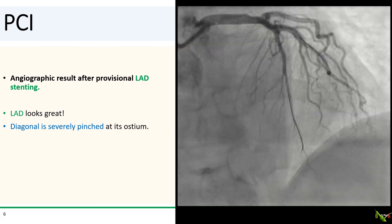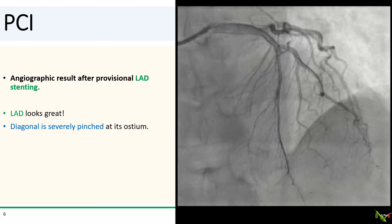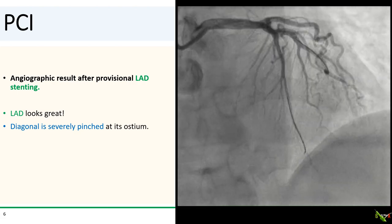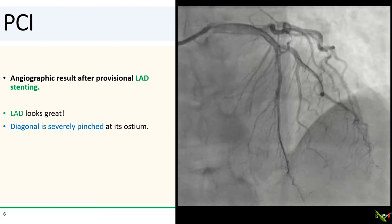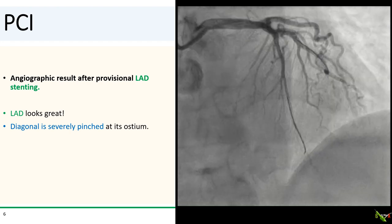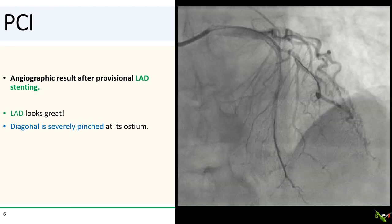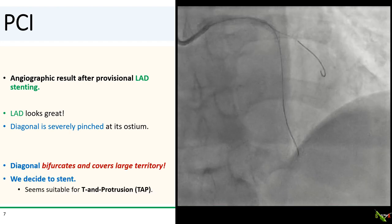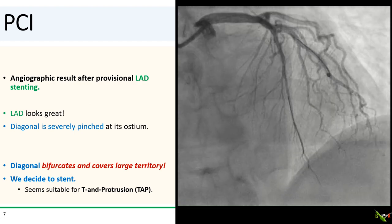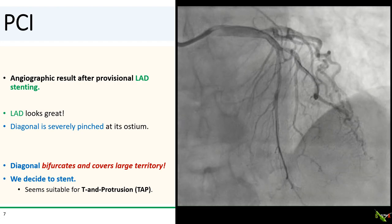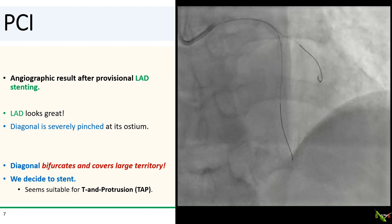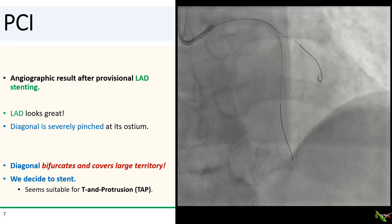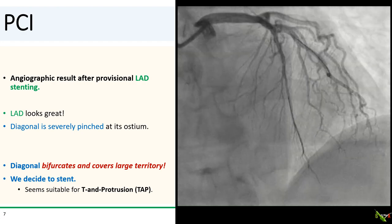Looking at it from a different angulation, it's clear that the diagonal became severely pinched at its ostium. Unfortunately, that diagonal branch does bifurcate and covers quite a bit of myocardium, so we felt that we had to go ahead and stent it.